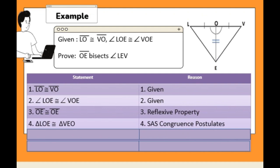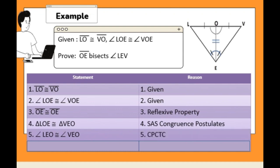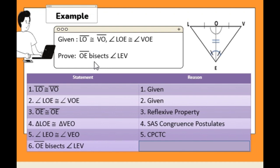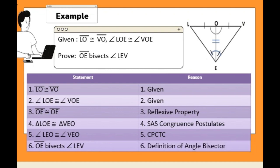Since we have two congruent triangles, angle LEO is congruent to angle VEO — the reason is CPCTC, or corresponding parts of congruent triangles are congruent. Therefore, we can now prove that line segment OE bisects angle LEV — the reason is definition of angle bisector.